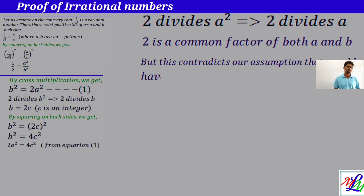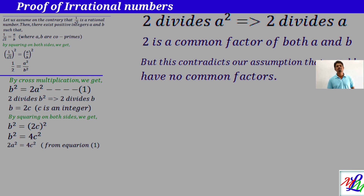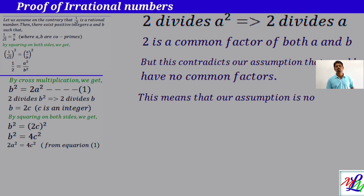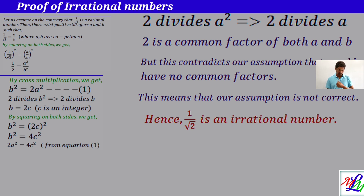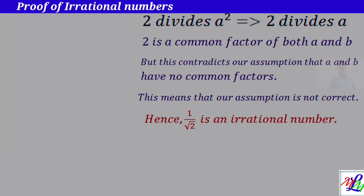But this contradicts our assumption that a and b have no common factors, since we started by letting a and b be co-primes. This means our assumption is not correct. Hence we conclude that 1 by root 2 is not a rational number — it is irrational. That's all for today's class; we will meet in the next class with another problem.